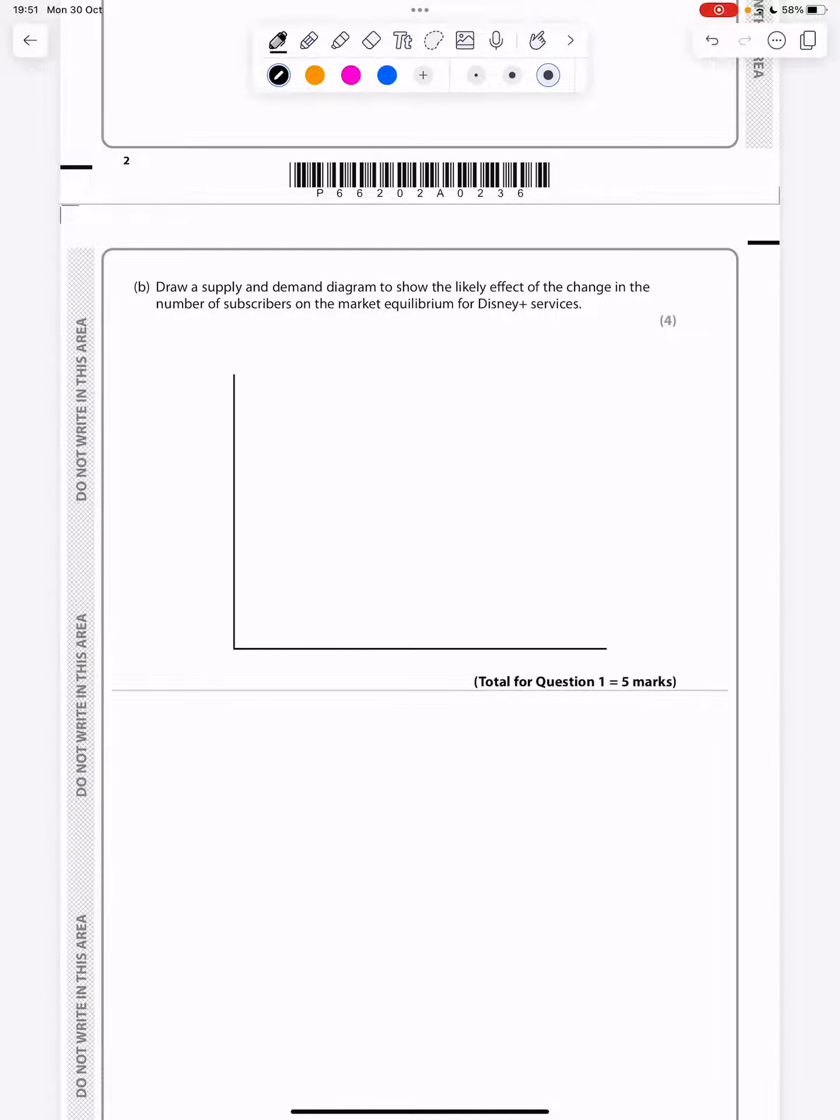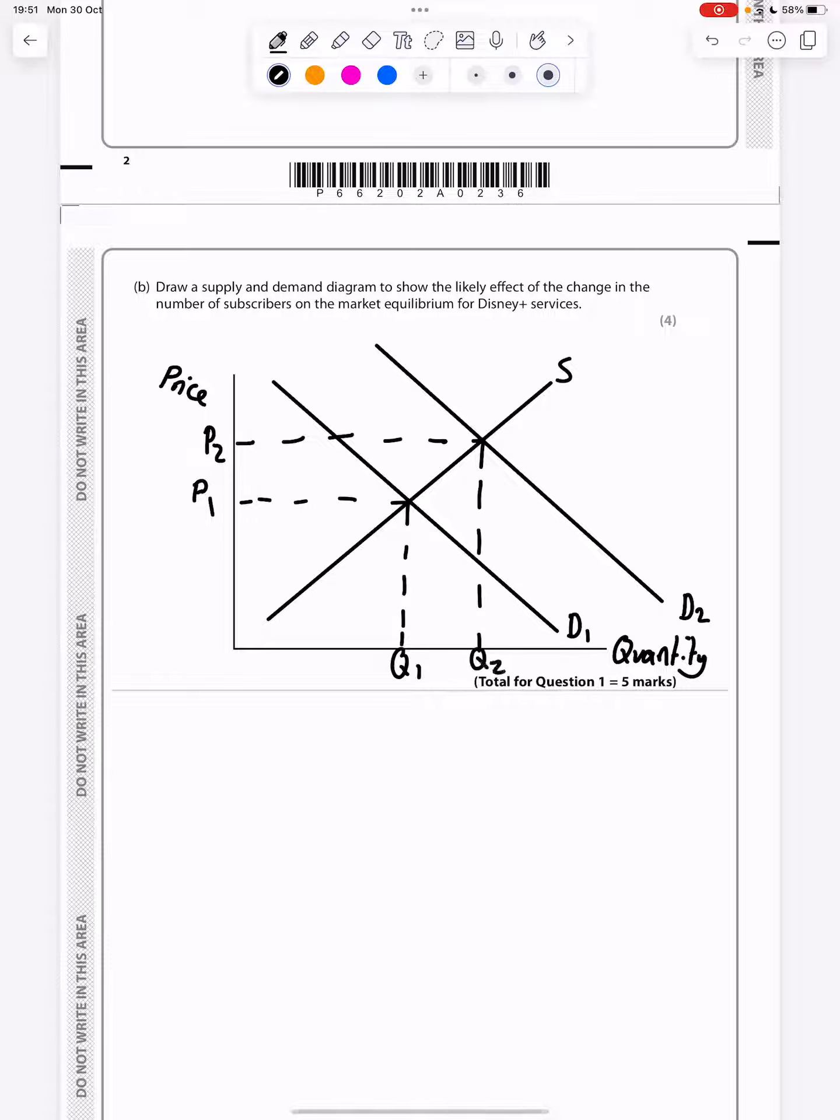Draw a supply and demand diagram to show the likely effect of the change in the number of subscribers on the market equilibrium. Nice and straightforward. We need to label price and quantity. We have our demand curve and supply curve with our original equilibrium Q1 and P1. Because there's an increase in subscribers, demand has increased at each price, so we see this outward shift of demand with our new equilibrium point P2 and Q2.